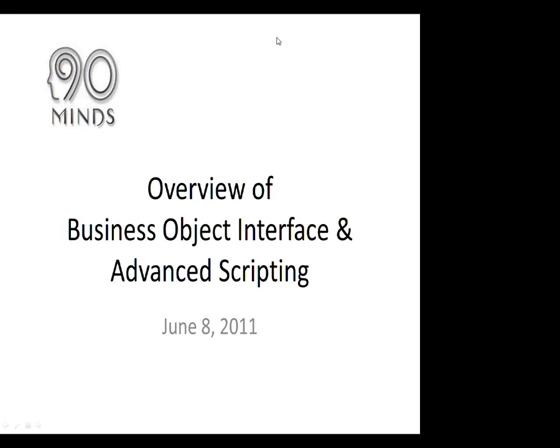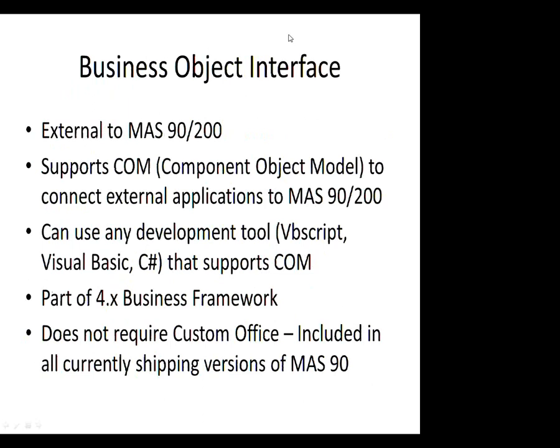As part of this overview, we'll talk first about the Business Objects Interface within MAS 200 and how it differs from using advanced scripting. The Business Objects Interface is really something to think of as external to MAS 200. It is technology within the software, but it is utilized externally. It supports the COM object model so that any development tool — whether VBScript, Visual Basic, or C# — if it supports COM objects, you can use those from an external application. It is part of the 4X Business Framework, which means it is only available for modules in the Business Framework.